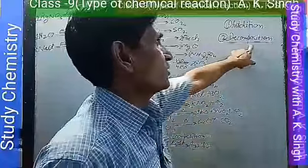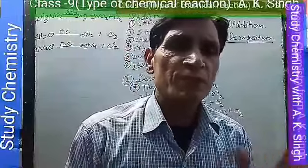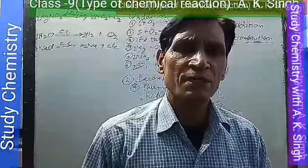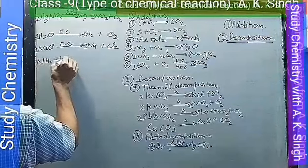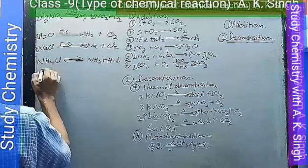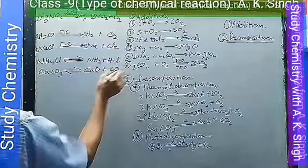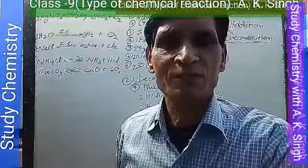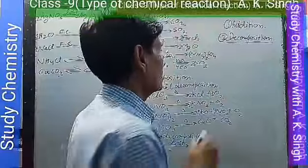Next — thermal dissociation. This is also a type of decomposition reaction: a decomposition reaction in which the products interact to reform the original reactant substance. It is a reversible thermal decomposition reaction. For example, NH₄Cl forms NH₃ + HCl; CaCO₃ forms CaO + CO₂. On heating it decomposes; on cooling the products interact to form the original substance.